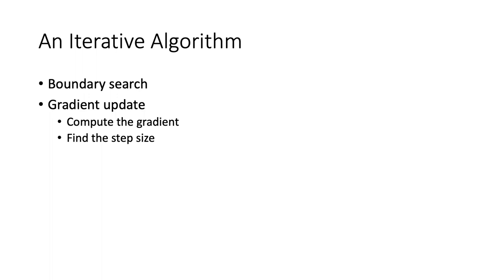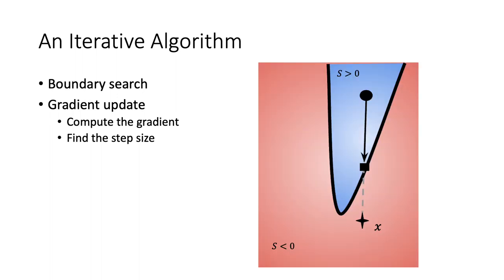Now we propose an iterative algorithm. Each iteration is composed of two steps. The first step is boundary search and the second step is gradient update. Let's restrict ourselves to the L2 setting for the best visualization. On this figure, the blue region is where S is positive and the red region is where S is negative. S is the original image which lies in the negative region. Assume we start from x_t in the positive region at the t-th iteration.